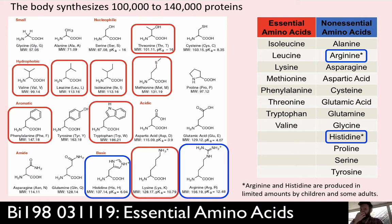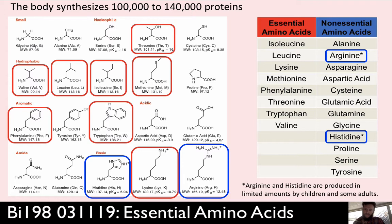There are eight amino acids that your body cannot synthesize, which the body requires to make the functional proteins that are you. Those amino acids need to be derived from the diet — you've got to get them by eating them. You can see them outlined in red.